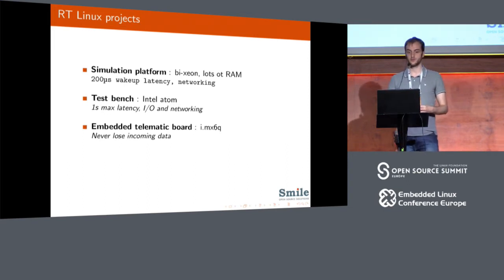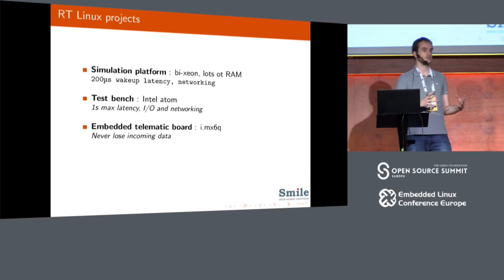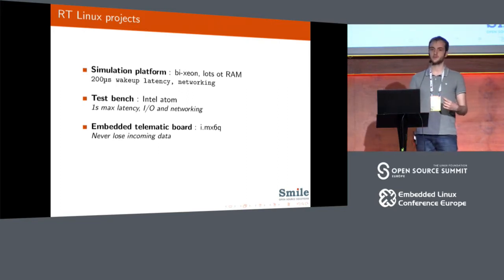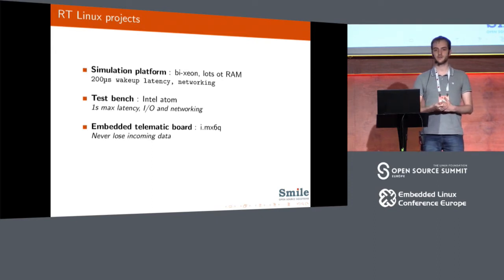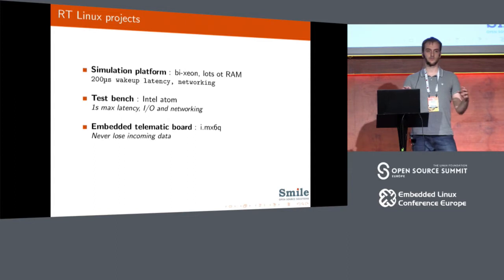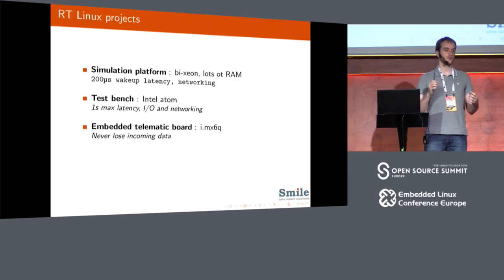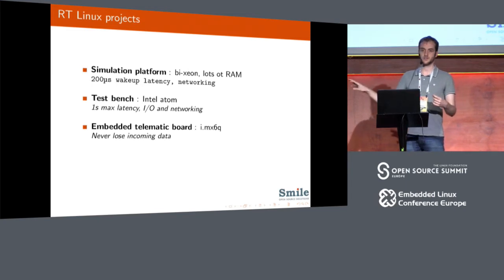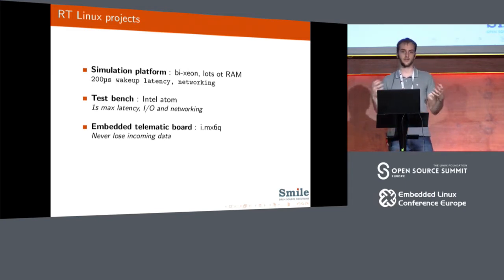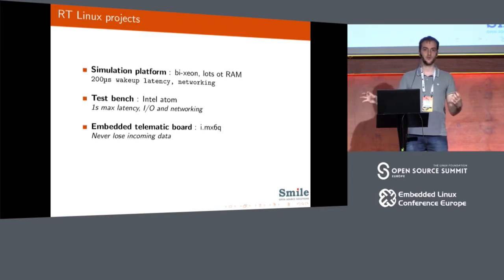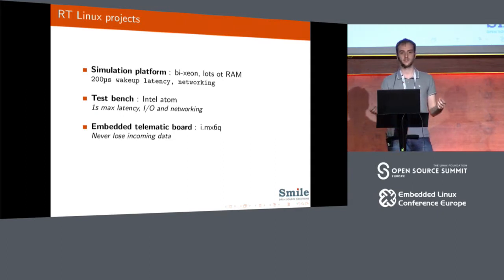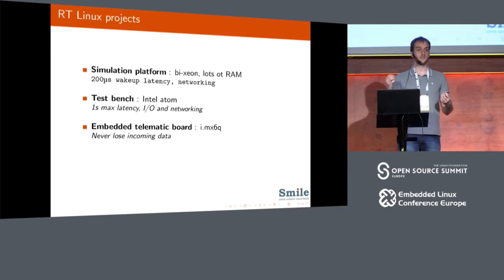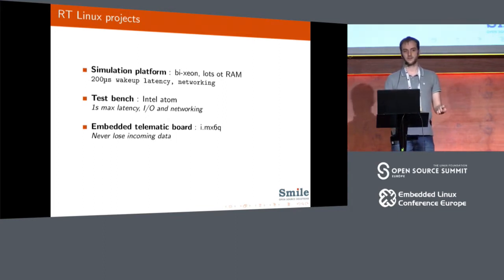The third project I worked on for two years was a more embedded product using an ARM-based platform — an IMX-6 from Freescale — embedded into vehicles like tractors, buses, and trucks, performing acquisitions on all vehicle buses, specifically the CAN bus. We needed to gather all data and never lose any incoming packet while also running customer load on the IMX-6. The system could be under heavy CPU load, so the preempt RT patch here was more for deterministic behavior rather than strict real-time.